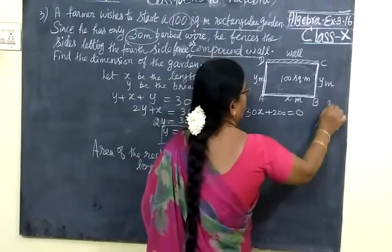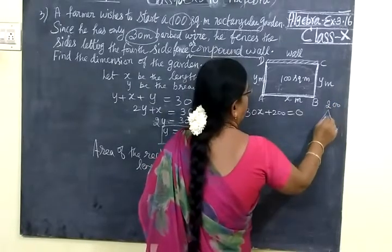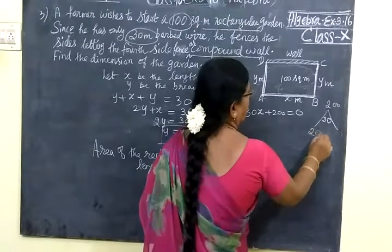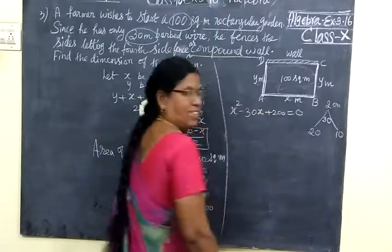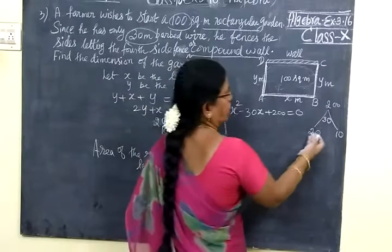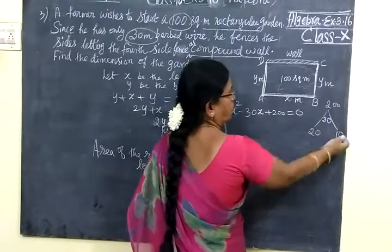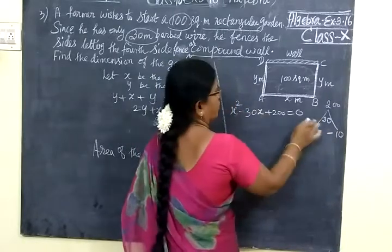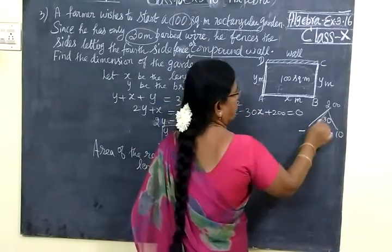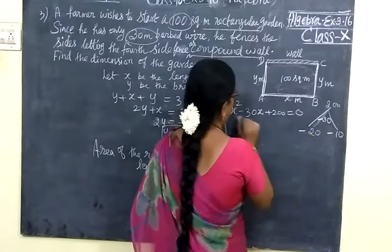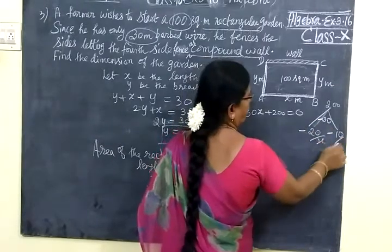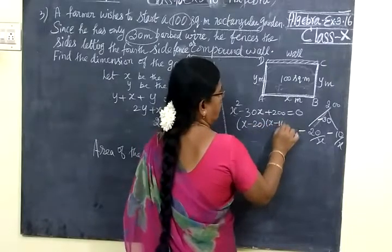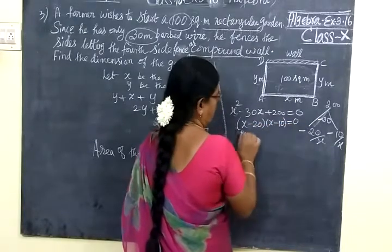So multiply by 200. Here, add by you are getting 30, 20. So 20, 10. You can take really simple only. 20, 10. 20 into 10, 200. 20 plus 10. Here we are taking minus. Because it is given minus. So you put minus sign. Here, that's the x only. So x minus 20. So x minus 20, x minus 10 equal to 0.